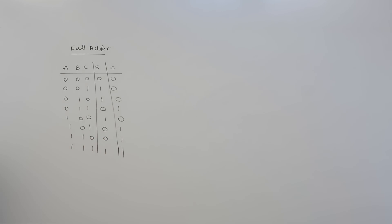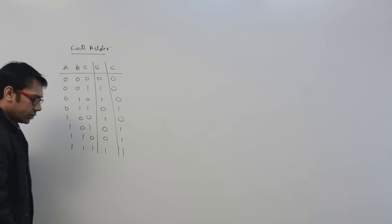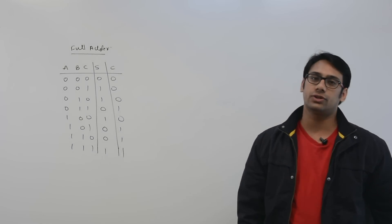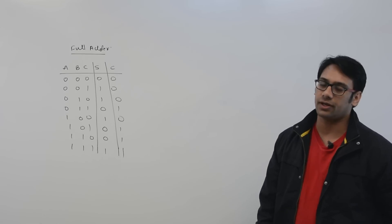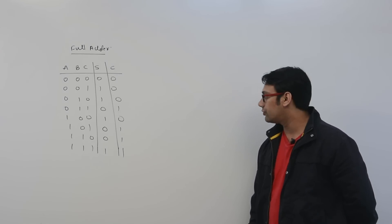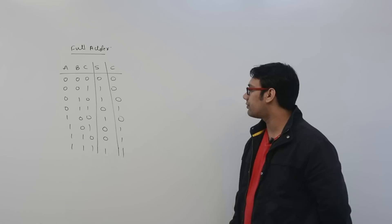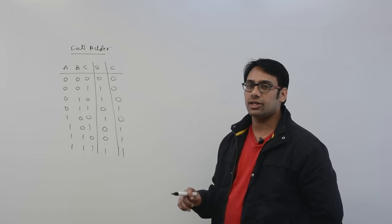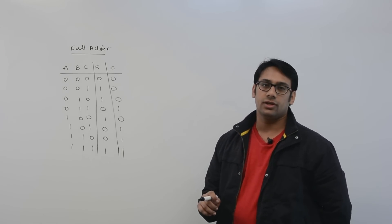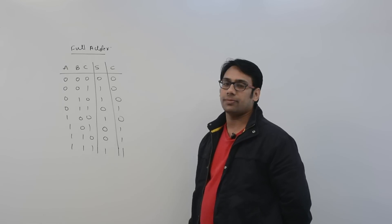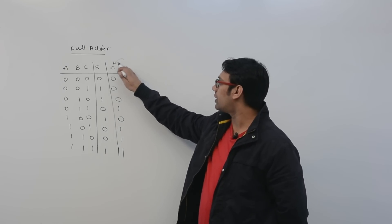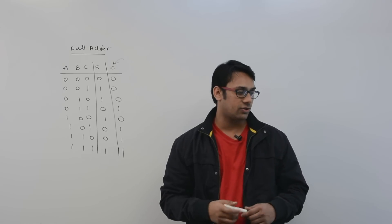Okay, so this is the full adder. We needed to identify why there was a dependency. As we studied in the previous video, the dependency is due to carry only. So we only need to identify: can we make the same ripple carry adder where there is no dependency using carry?